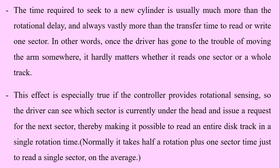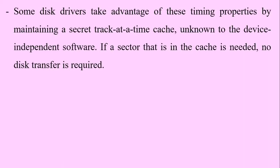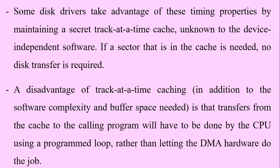Normally, it takes half a rotation plus one sector time just to read a single sector on average. Some disk drivers take advantage of these timing properties by maintaining a secret track-at-a-time cache, unknown to the device-independent software. If a sector that is in the cache is needed, no disk transfer is required. A disadvantage of track-at-a-time caching — in addition to the software complexity and buffer space needed — is that transfers from the cache to the calling program must be done by the CPU using a programmed loop, rather than letting the DMA hardware do the job.